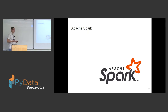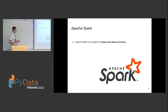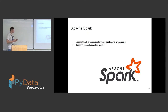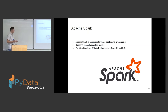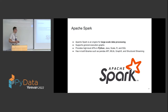Apache Spark is an engine for large-scale data processing. It supports general execution graphs — unlike Hadoop MapReduce, which is very limited to one phase of processing that you then have to chain. With Spark you can build really arbitrary processing. It provides high-level APIs in many languages such as Python, Java, Scala, R, and also Spark SQL. It has built-in libraries for machine learning, graph processing, and stream processing.